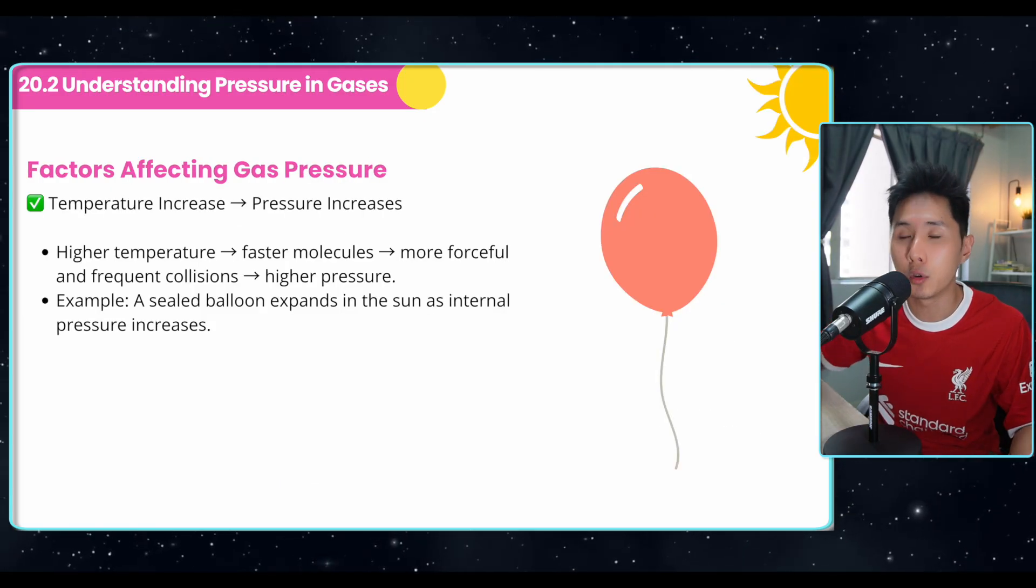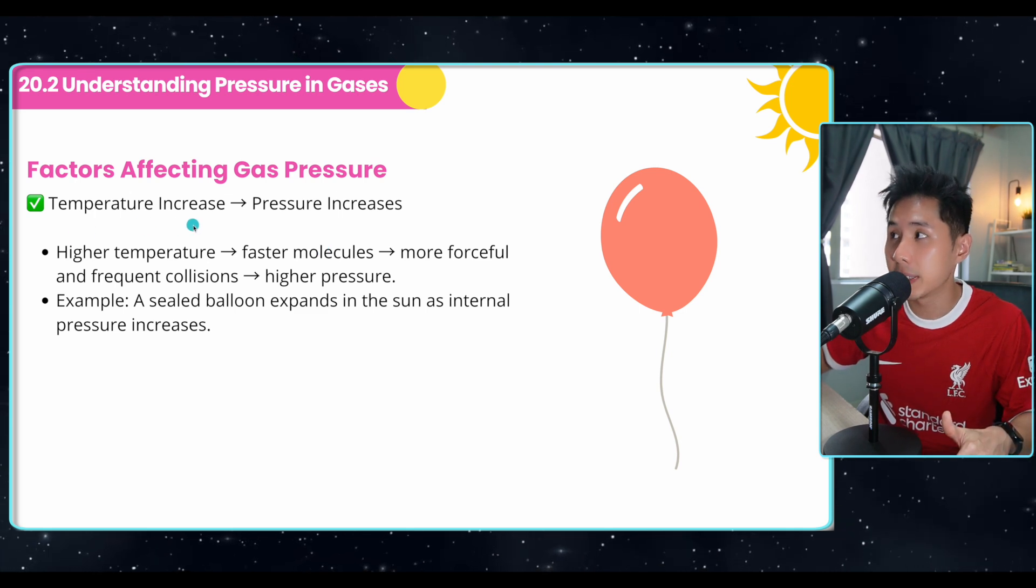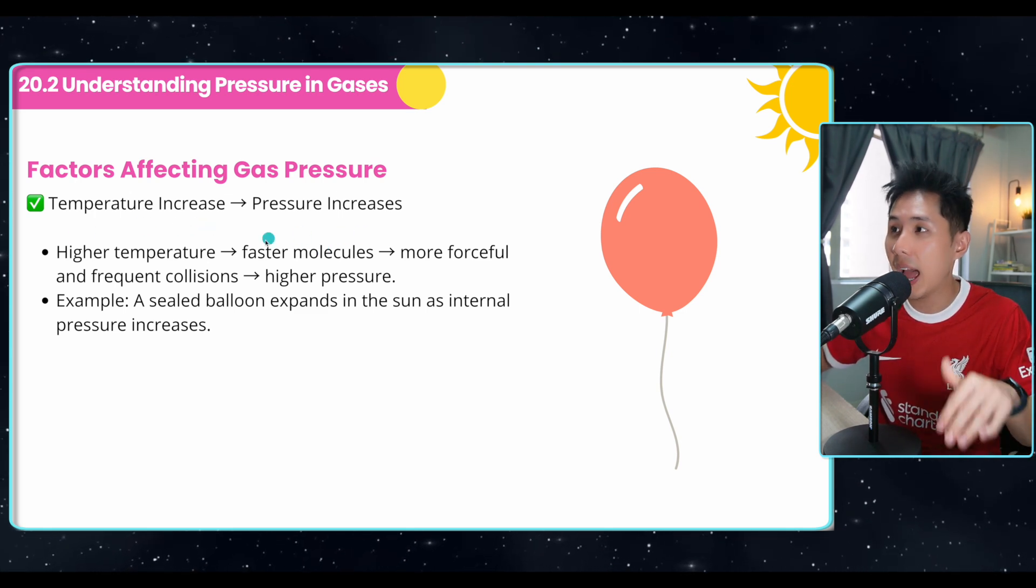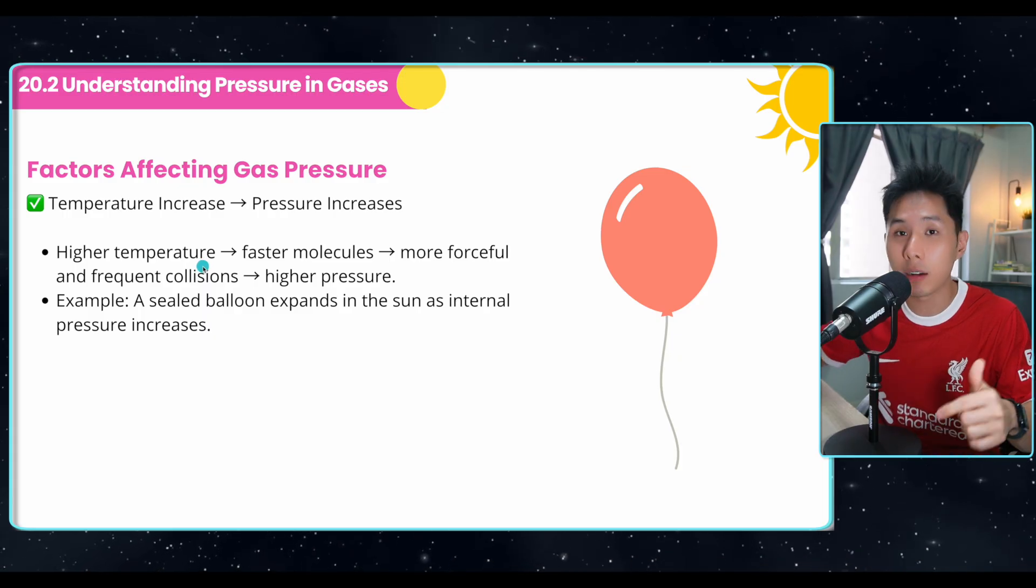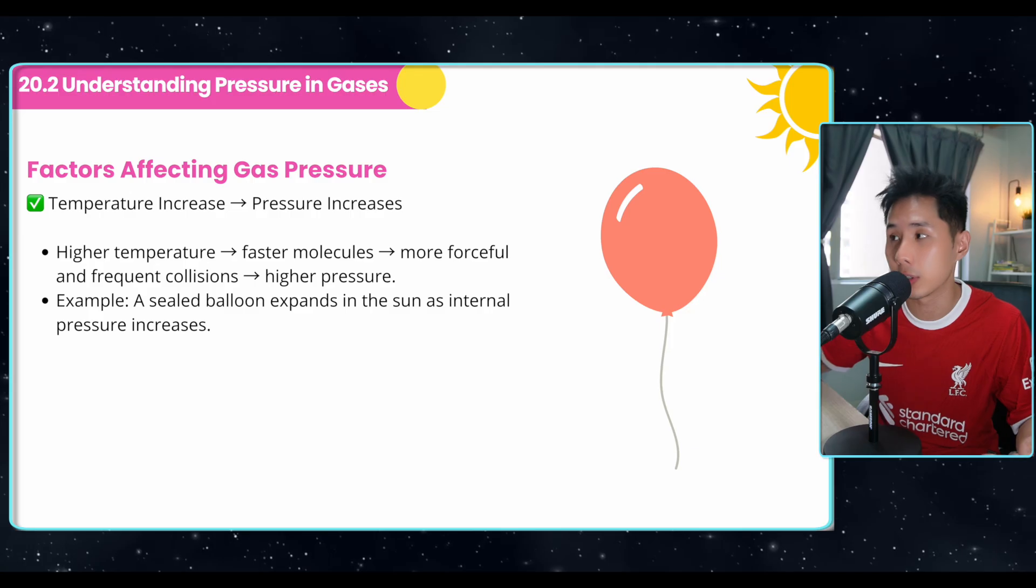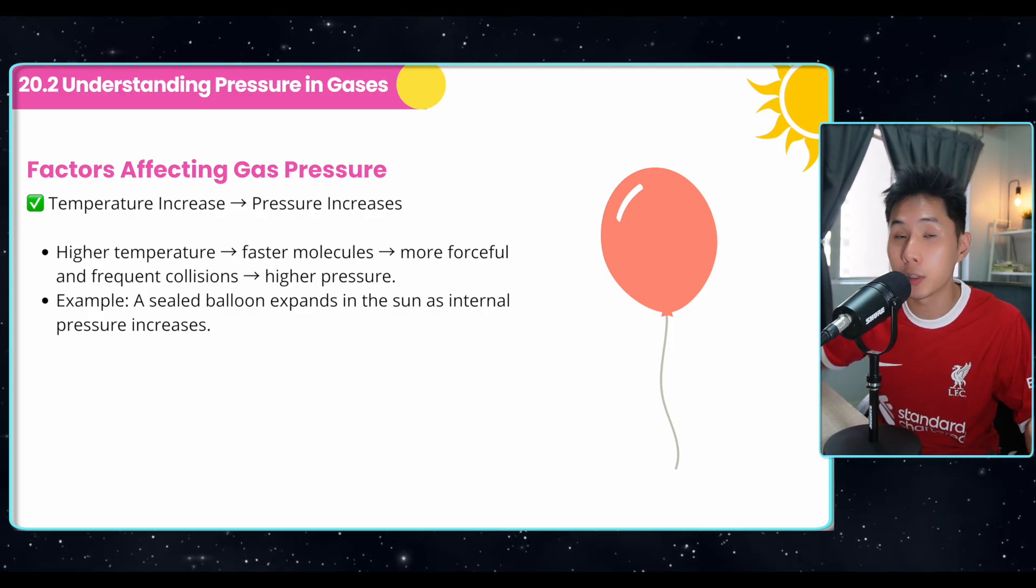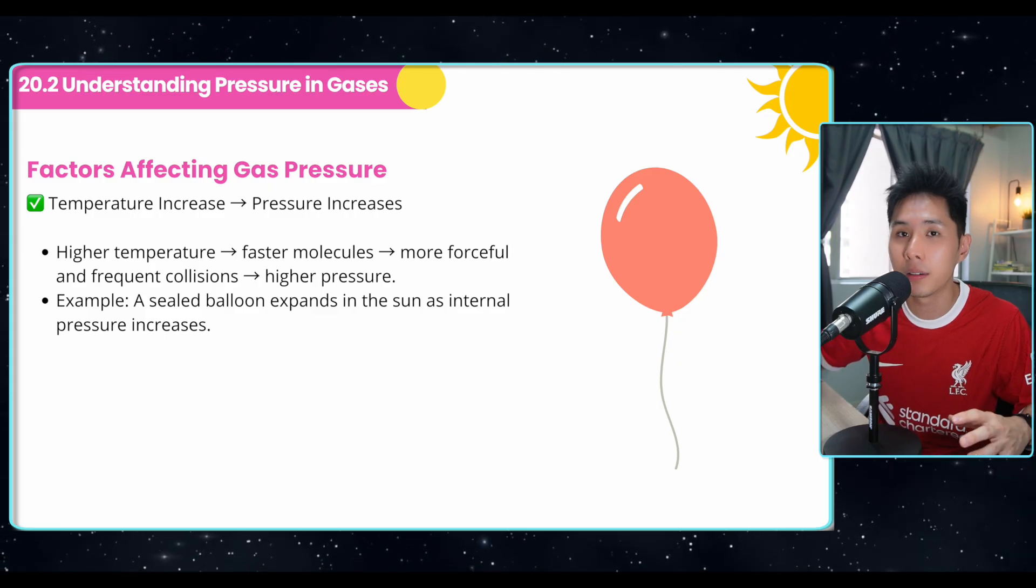So we have learned previously that the faster they move, the more pressure they exert. And because of that, when temperature increase, pressure also increase. Because when it's high temperature, it causes the molecule to move faster. Hence, more collision result in more pressure. That's why when you put a balloon under the sun, because of the high temperature, particles move very fast. They expand until they burst.